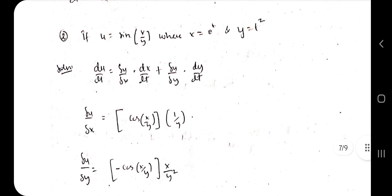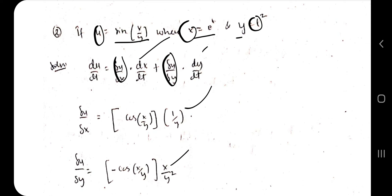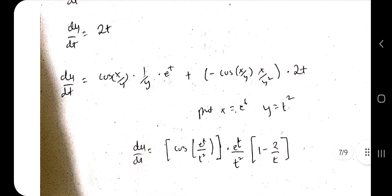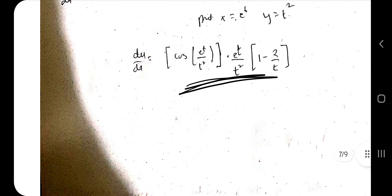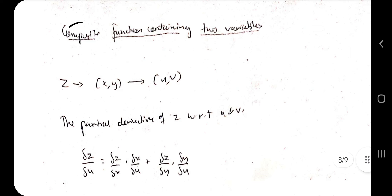Considering one more total derivatives example: u is given as another function, with x = e^t and y = t². First find ∂u/∂x and ∂u/∂y, then find dx/dt and dy/dt. Add all four terms together, then substitute x = e^t and y = t² to get the final answer for du/dt.